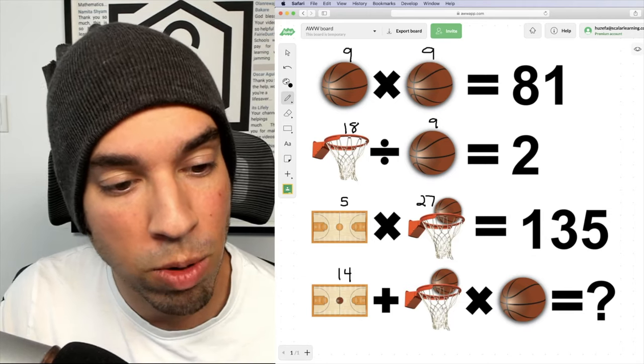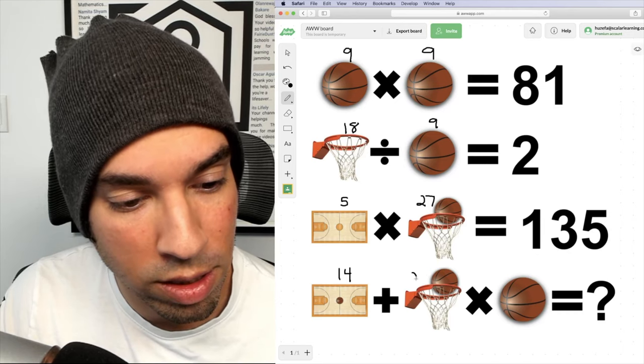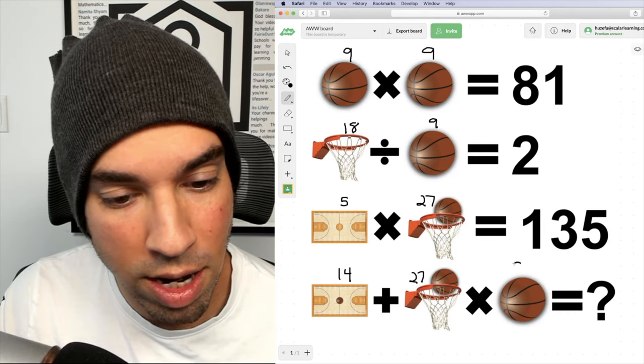Then we have the basketball and the hoop, which we already know is 27. And then we have the ball here, which is nine.